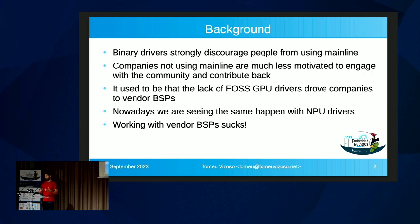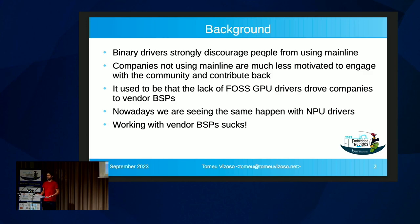That kind of got fixed. We got Panfrost. Imagination is contributing directly. Freedreno is in a very good state for the Qualcomm hardware. But then people are trying to do machine learning — they want it to be fast, to use not much power, to leave the CPU free for other tasks. And they have to use blobs, and they are again going to vendor BSPs.